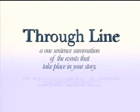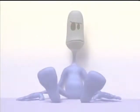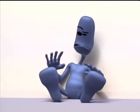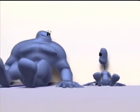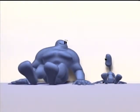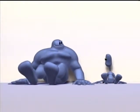The first step in creating your story is to create a through line. A through line is a one-sentence summation of what happens in your story. The first element of a good through line is your characters — who the audience makes a connection with and follows through your story.